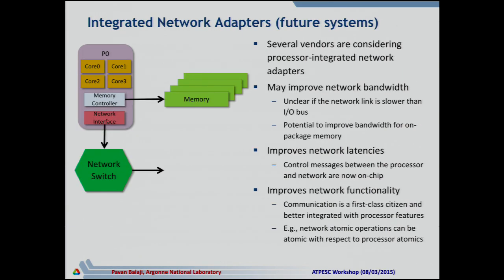The next generation of network adapters is looking toward even closer integration — having the network interface integrated directly onto the processor chip itself. The trend is essentially: everything on the processor chip. This may improve network bandwidth somewhat, though the IO bus is not a huge bottleneck with NVLink and QPI. However, it will almost certainly improve network latency because the control messages required to negotiate between processor and network are reduced.